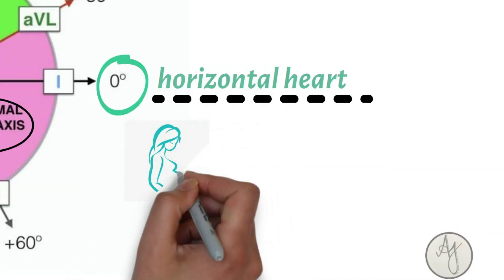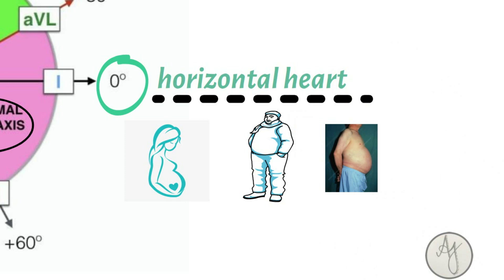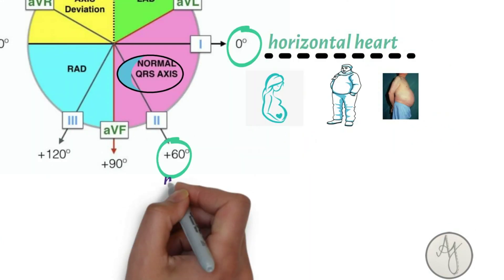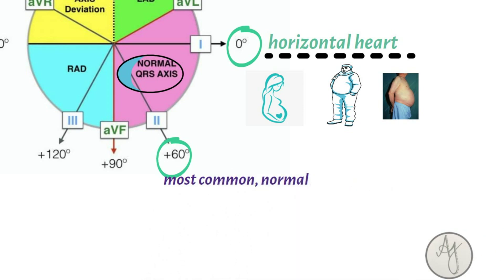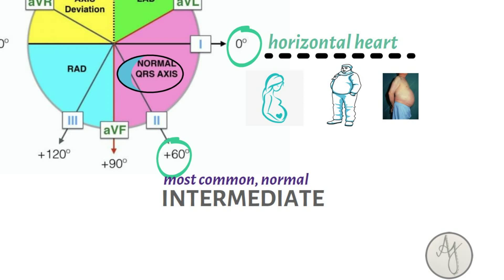It can occur physiologically in pregnancy, obesity, or patients with ascites. If it is at plus 60 degrees, this is the most common position of the axis. It's the most commonly common position in which a heart will be placed in the thorax of a normal human. This is called an intermediate position.